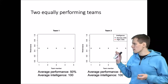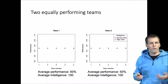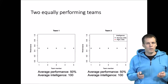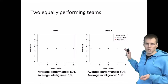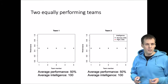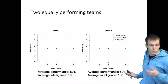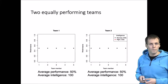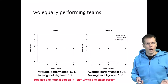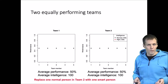Let's take a look at the example. We have two teams here, team 1 and team 2, and they both have five team members that all have an intelligence of 100 and performance of 50%. So there is no within-team variation in performance or in intelligence. Now what will happen when we add one smart person to team number two and take one normal person away from that team?